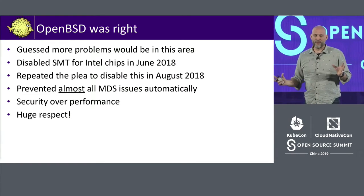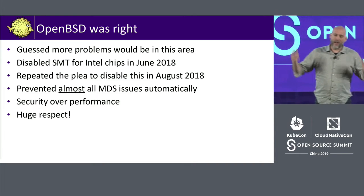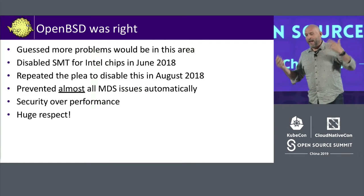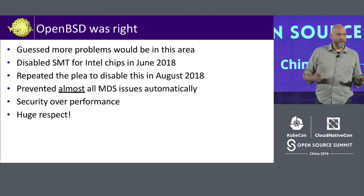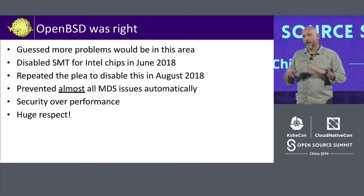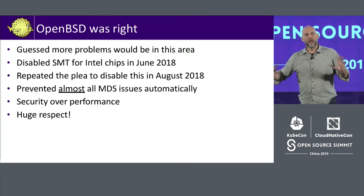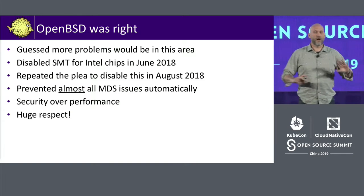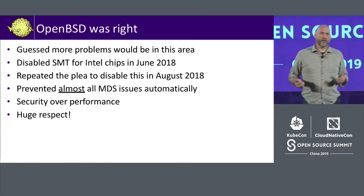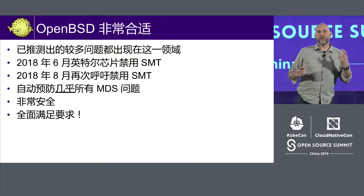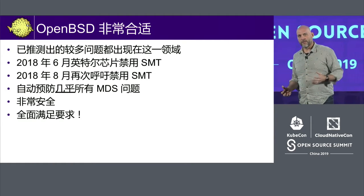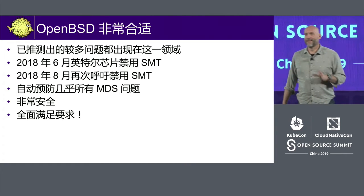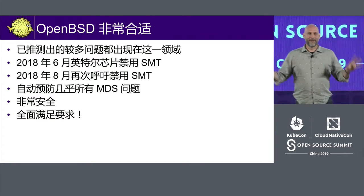People laughed at them and said, why would you ever do that? And again in August they said, please disable this — we think there might be problems in this area. And they were right. If you had disabled hyperthreading, almost all these issues are gone — almost all of them — without any updates to the operating system or BIOS. They chose security over performance. Because when you disable every other CPU in your system, you will have performance issues. I have huge respect for them. They got this right.